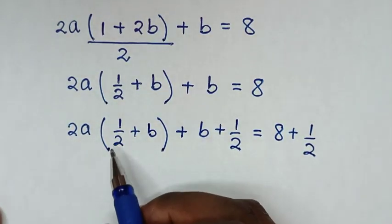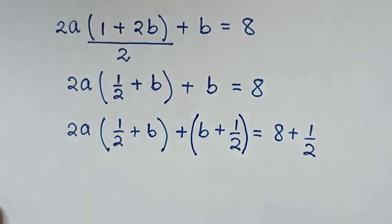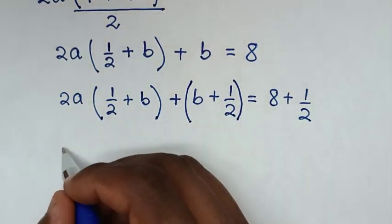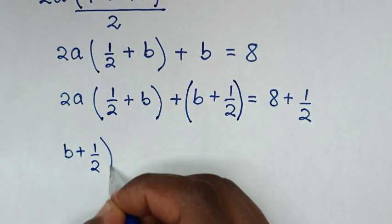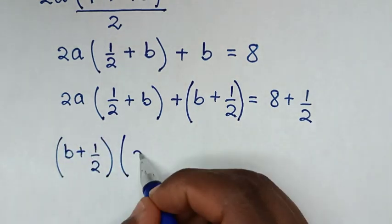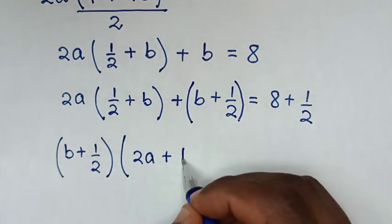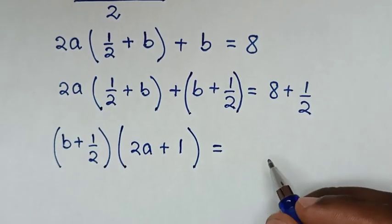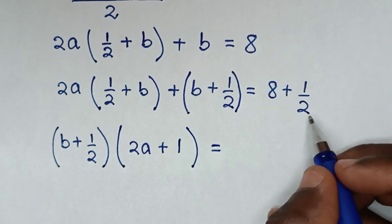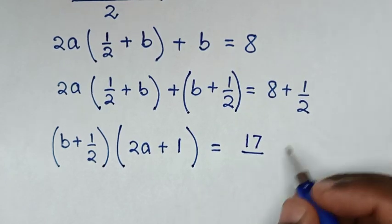Now, in here ½ + b and in here b + ½ — they are the same, so you can place a bracket here. Then b + ½ is common, so we take (b + ½) out of the bracket. This divided by this is 2a, plus b + ½ divided by (b + ½) is 1, bracket, is equal to 8 + ½, which as an improper fraction is 2×8 = 16, 16 + 1 = 17 over 2.